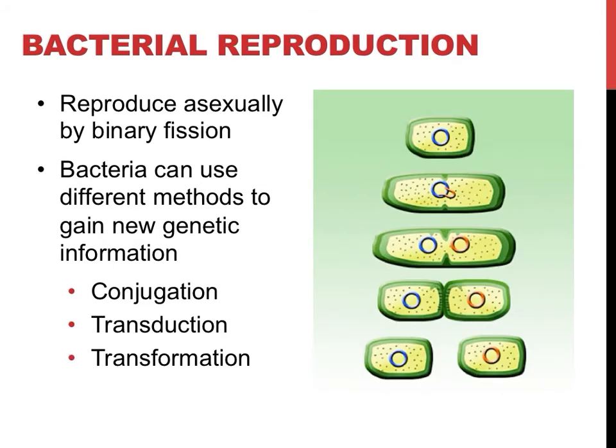Bacteria reproduce asexually through a process called binary fission. Asexual reproduction means that identical offspring, or clones, are produced. Binary fission is a simple process illustrated on the right, where DNA is copied and cells just split in half, allowing the very small and simple prokaryotes to reproduce very quickly. Under the right conditions, bacteria can double in number every 20 minutes.